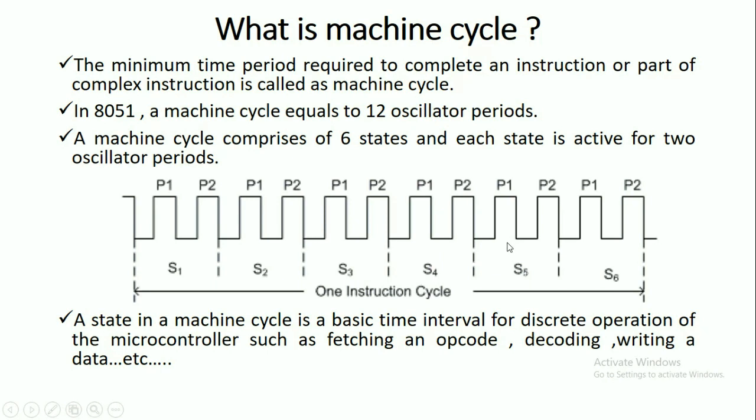And each state is active for two oscillator periods. So here this is the state S1 which contains two oscillator periods, which is called as a state. So a state in a machine cycle is a basic time interval.